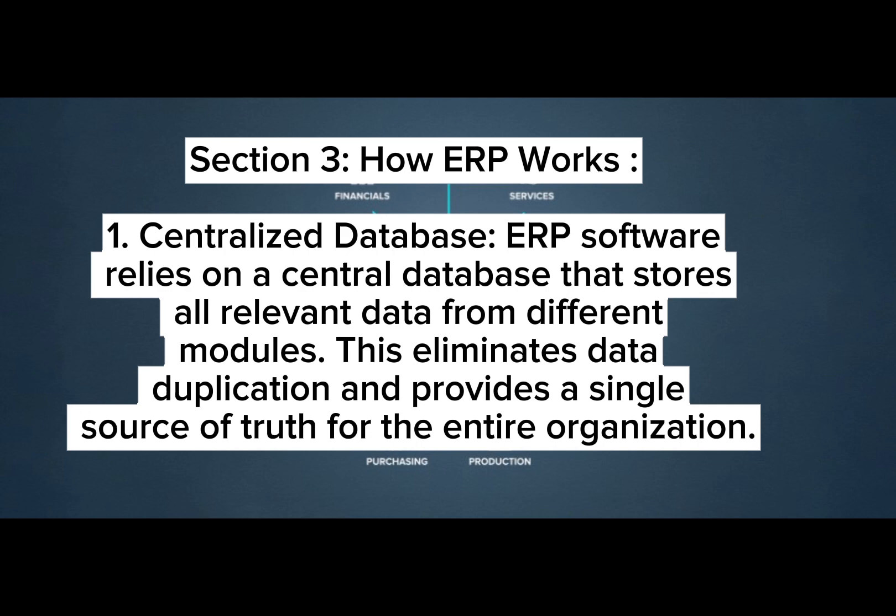Section 3: How ERP Works. 1. Centralized Database: ERP software relies on a central database that stores all relevant data from different modules. This eliminates data duplication and provides a single source of truth for the entire organization.